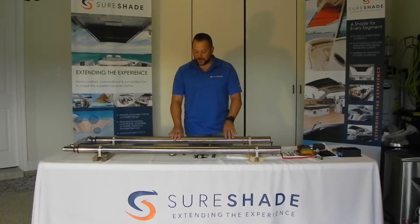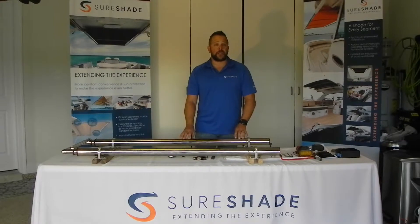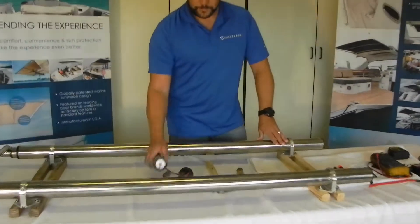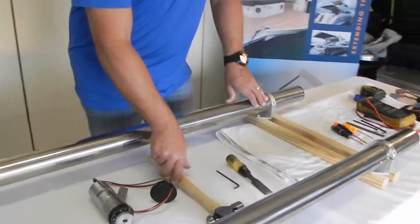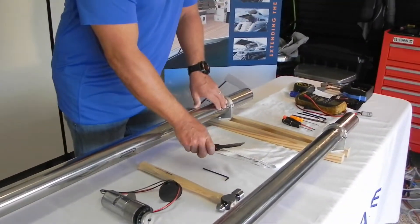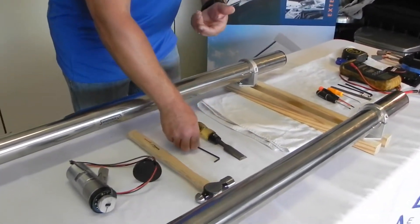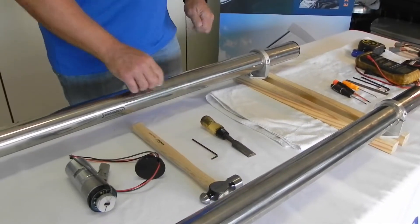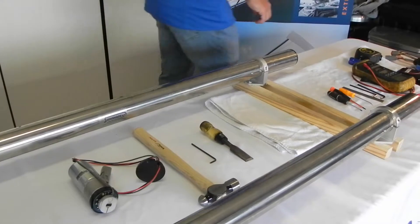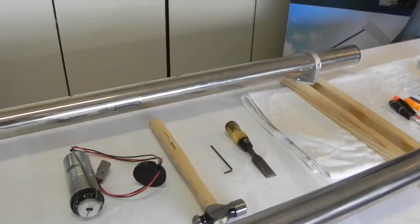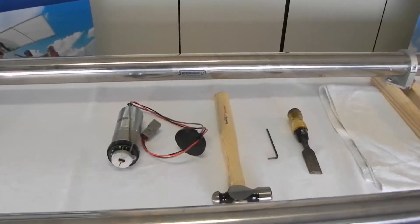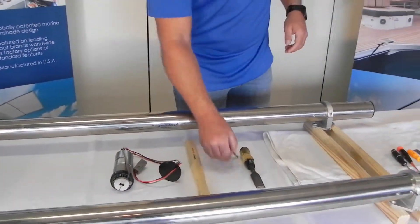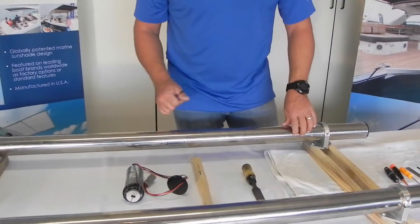So first things first, we've got our actuator tubes. The tools we're going to need to perform this are of course a new motor, a hammer, a dull chisel or a wide-bladed screwdriver, and an Allen wrench of 5/32nds to take the Allen screws off your actuator.